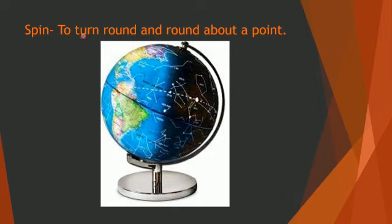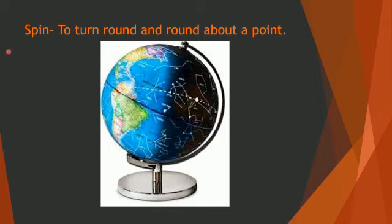Next one, Spin. Spin means to turn round and round about a point. See this picture — the earth is spinning, turning round and round about its axis. That point is called axis. Example: Earth spins on its own axis. We will discuss this in the next class.